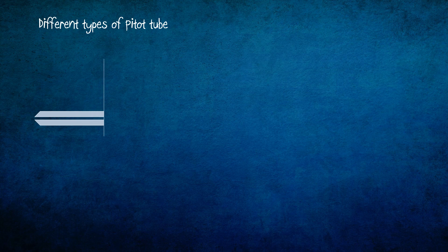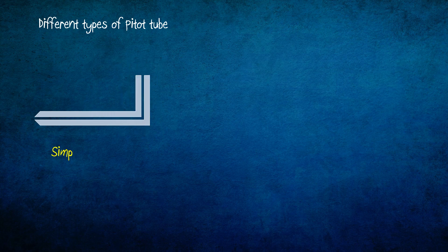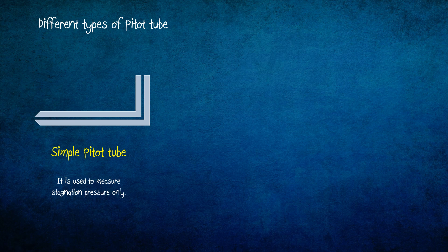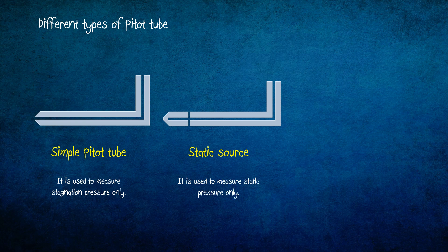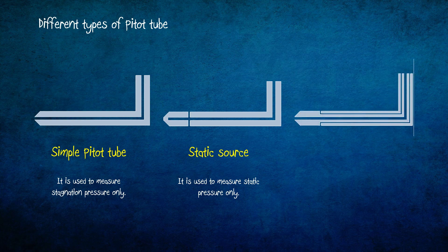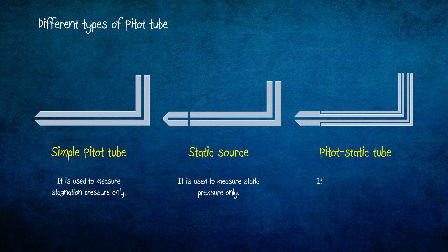There are several types of pitot tube. This is a simple pitot tube. It is used to measure stagnation pressure only. This is a static source which is used to measure static pressure only. And this is a pitot static tube to measure both stagnation and static pressures.